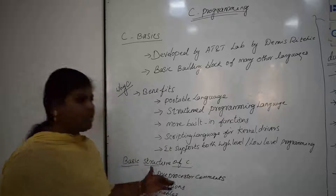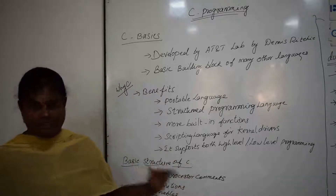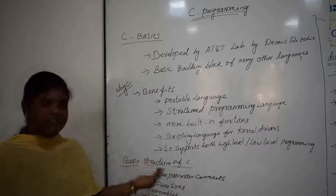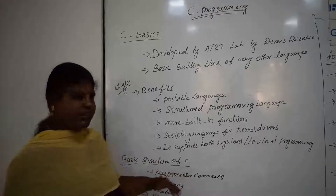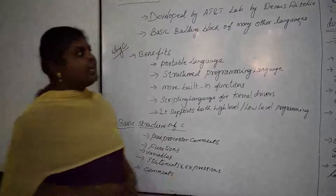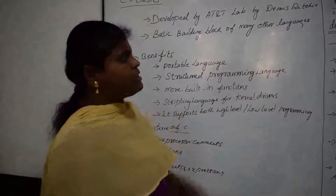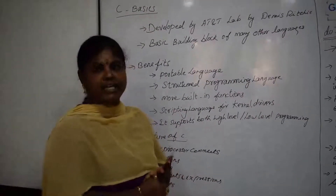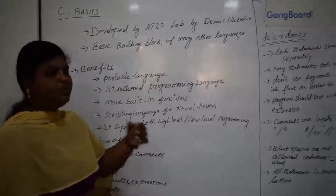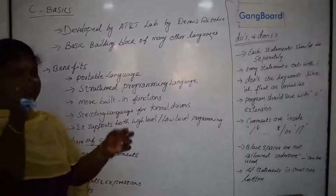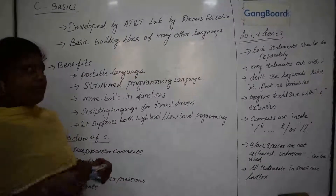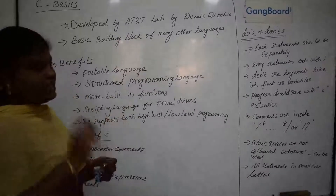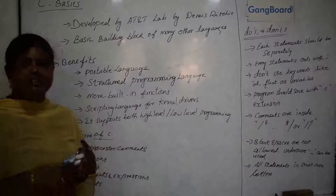The basic structure of a C program includes preprocessor commands, functions, variables, statements, and expressions. Each statement should be separated and ends with a semicolon. Do not use keywords like int or float as variable names.